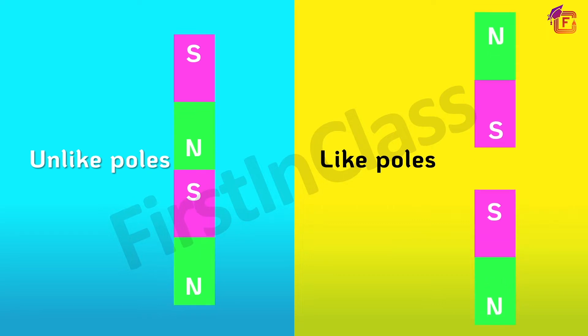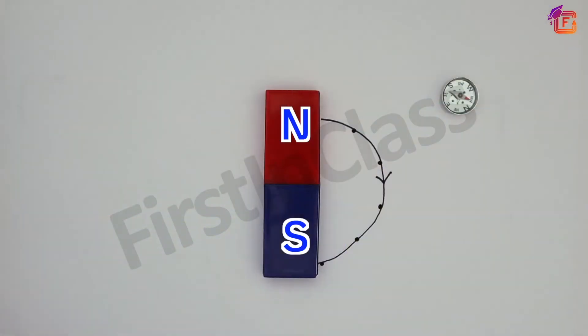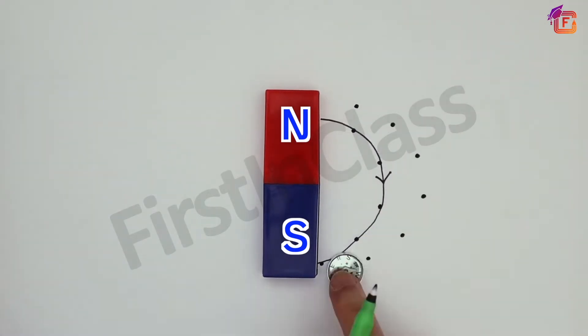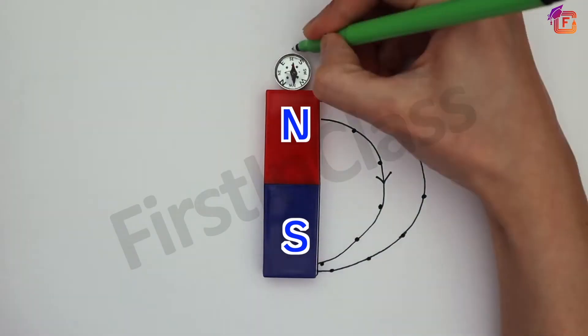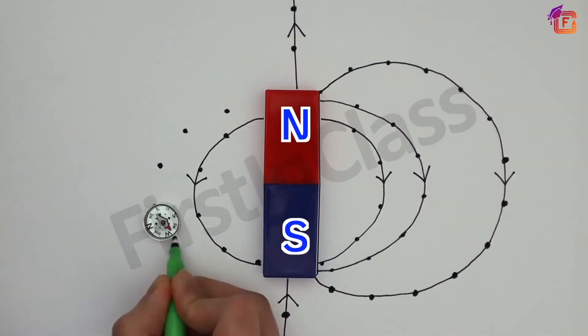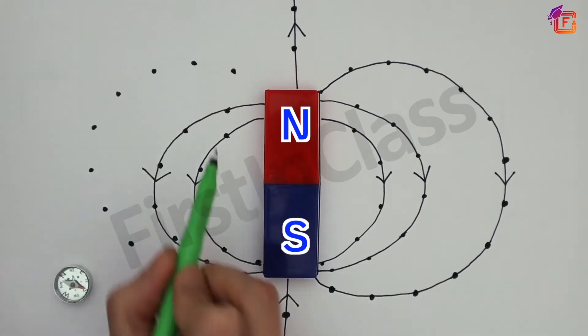But the magnets are not in each other's direct contact — then how do they interact? Yes, it is their magnetic fields. The magnetic field is not visible but is present around the magnets.